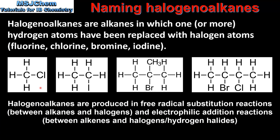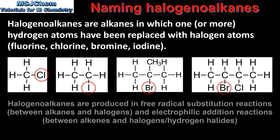Here we can see some examples of halogeno alkanes. In each example we can see that the hydrogen atom of an alkane has been replaced with a halogen atom. From left to right we have a chlorine atom, an iodine atom, and the last two molecules contain bromine atoms.